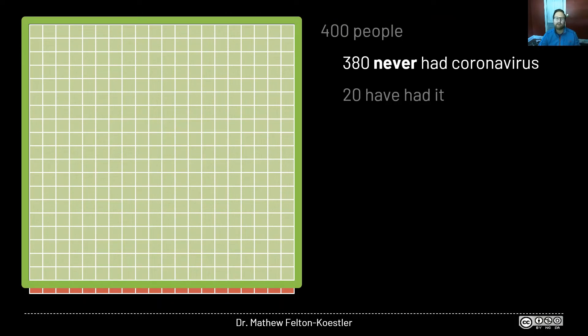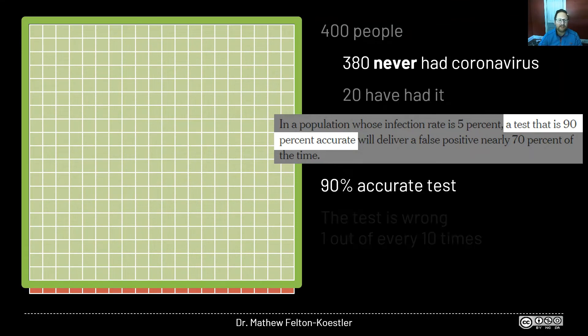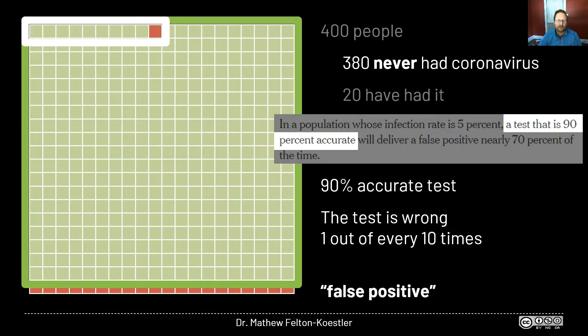We're going to start with these 380 people who have never had the virus. The article talks about a hypothetical test that's 90% accurate. Another way to say that is that the test is wrong 1 out of every 10 times. So let's take a look at a group of 10 people from here. The first person gets tested, and it comes back as saying you never had the virus. The second person gets tested and also comes back negative. And similarly, for 9 of the people in this group. But for one of the people in the group, this test is going to say they had the coronavirus, even though they never did. This is called a false positive. Of course, it may not always be the tenth person you test. I'm just putting it as the last tenth person here to keep things organized.